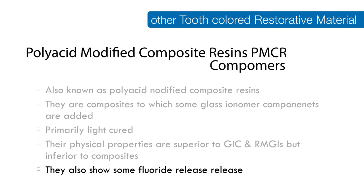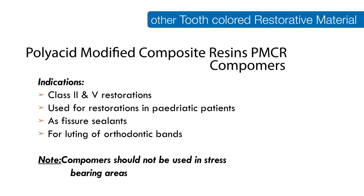Glass ionomer cannot bond to the tooth as strongly as composite — its bond is weak, while composite bond is very strong. Compomers have more composite-like properties, so the bond to the tooth is much better compared to glass ionomer. Importantly, compomers also show some fluoride release. However, they release fluoride mainly within 24 hours, after which they need to be recharged.